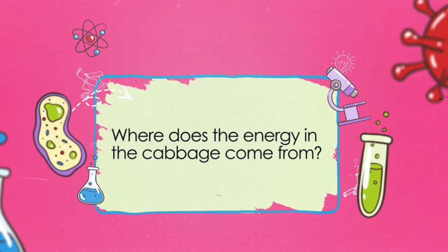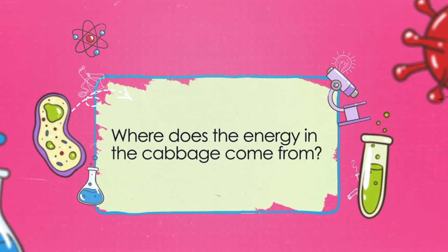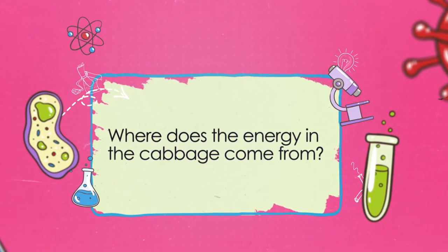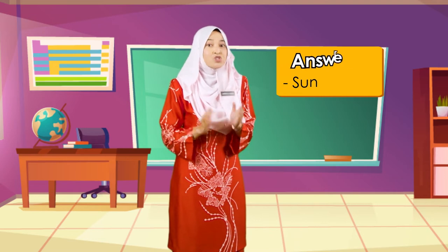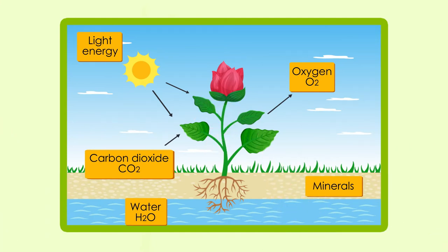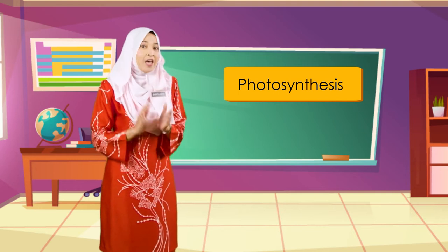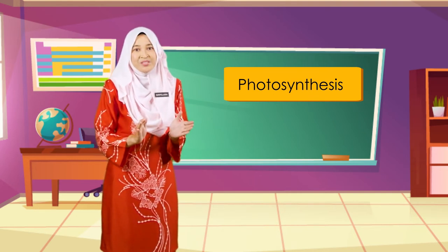But where does the energy in the cabbage come from? The energy comes from the sun. The cabbage is a producer. Green plants are producers as they are able to make their own food by converting the light energy from the sun into chemical energy through a process called photosynthesis, which you learned about in Form 1.